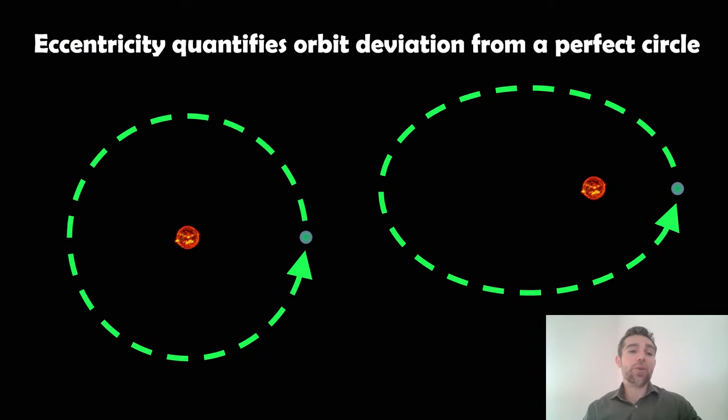We also need to know the eccentricity of the orbit, which quantifies the deviation of the orbit from a perfect circle. A perfect circle would have an eccentricity of e equals zero, and then it would go all the way up to almost one. Anything over one is not a closed orbit.